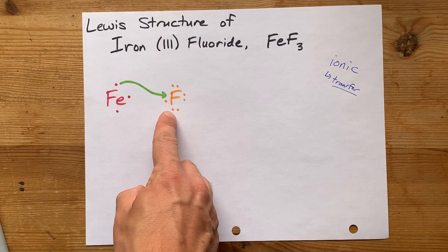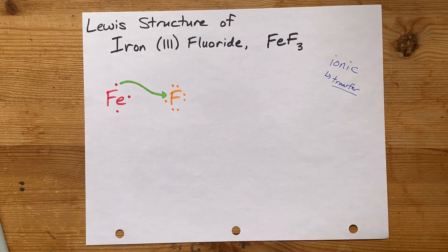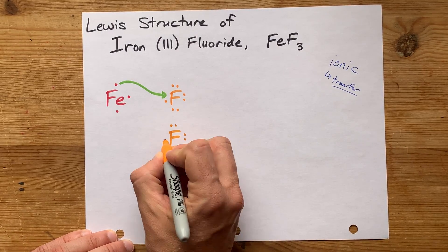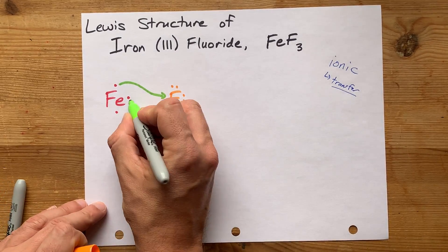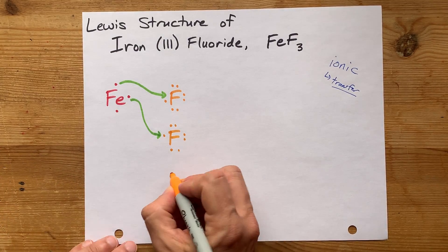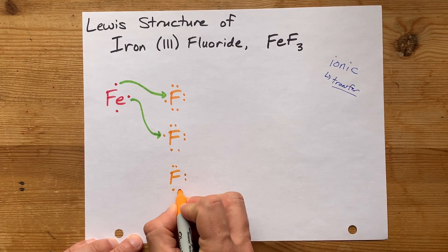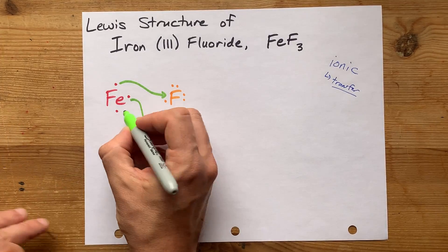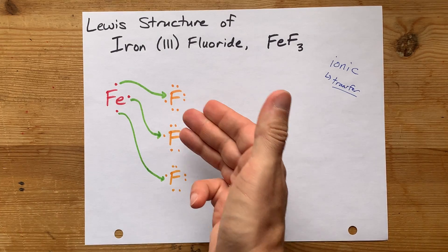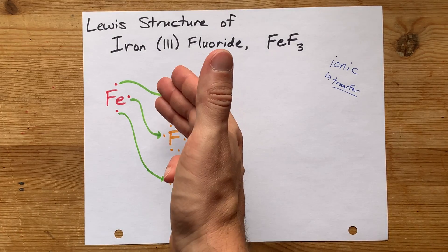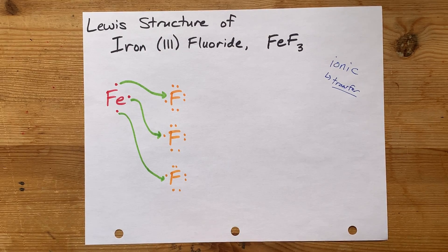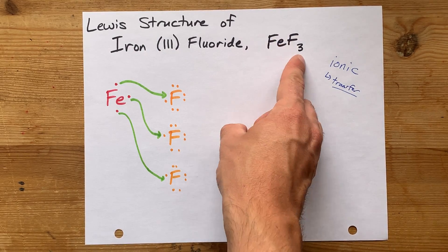But now, where are the other electrons going to go? Well, the answer is, we bring another fluorine into the picture to accept another one of those electrons. One, two, to make that pair. And another fluorine to accept the third and final of iron's electrons. The idea that we need three fluorines to accept all the electrons from this iron three is what makes the formula FeF3. Get it?